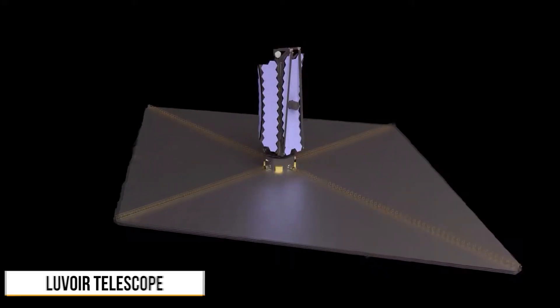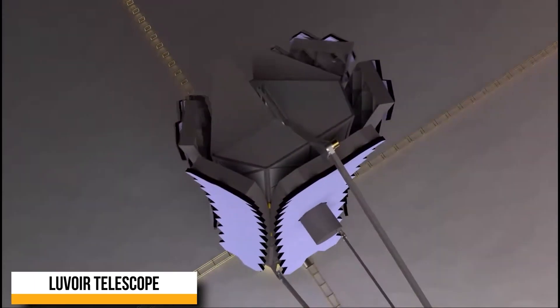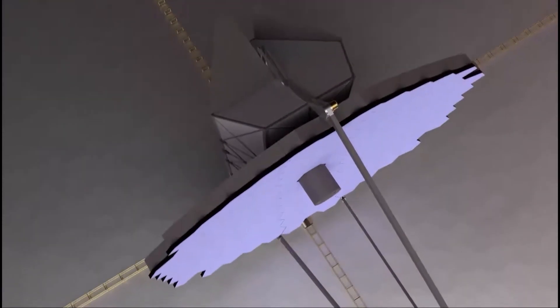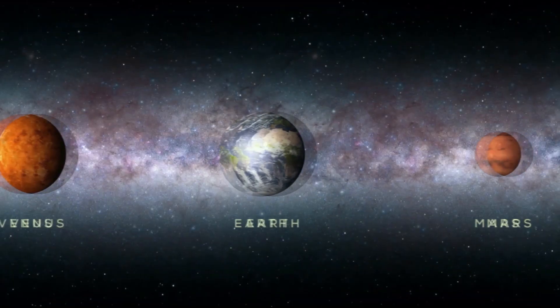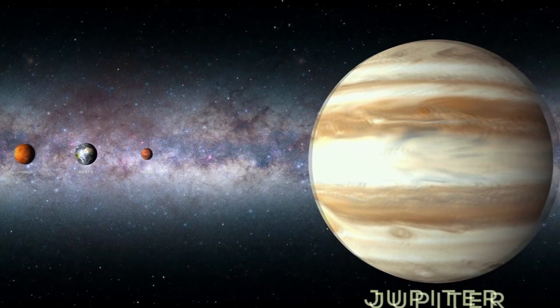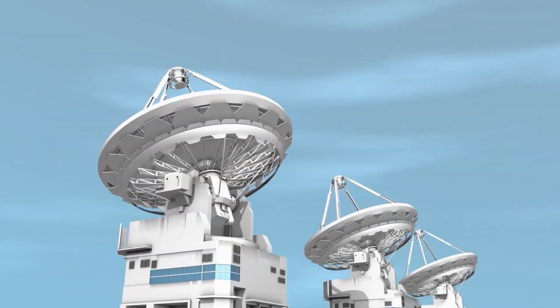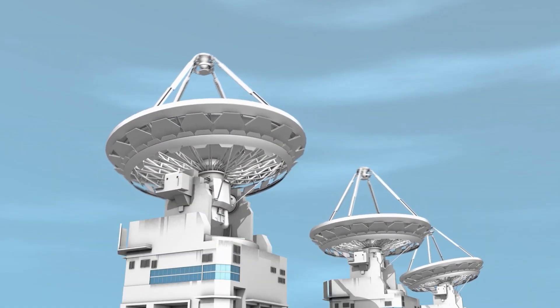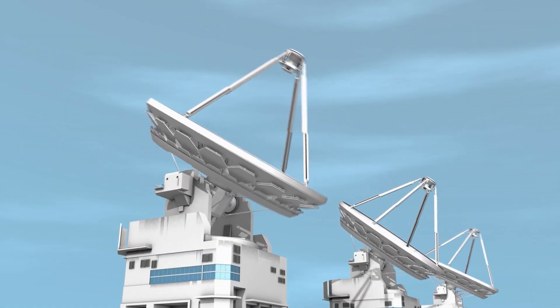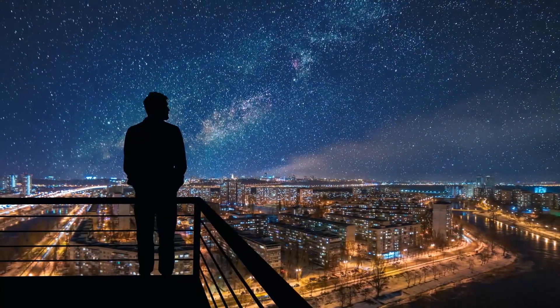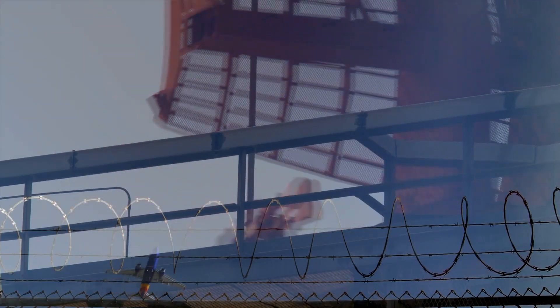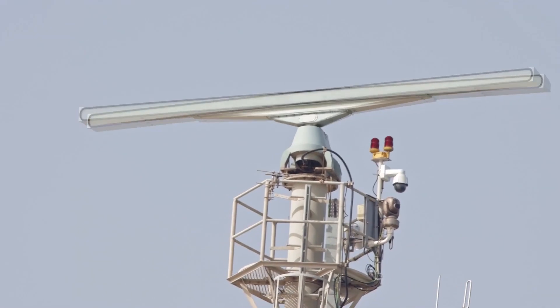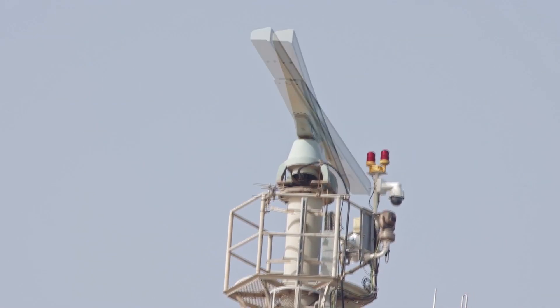The proposed LUVOIR telescope, for instance, could gather enough images in only four years to study the weather patterns, seasonal changes, and maybe even the surfaces of 50 Earth-sized exoplanets. It might start up as early as the 2030s, pending approval of funding and construction. If there are any traces of life in the universe, they should be easily detectable with the correct kind of equipment. Unfortunately, there is a high chance we won't find anything.